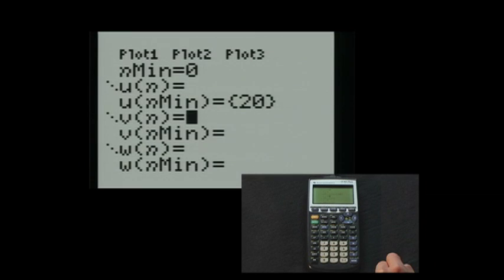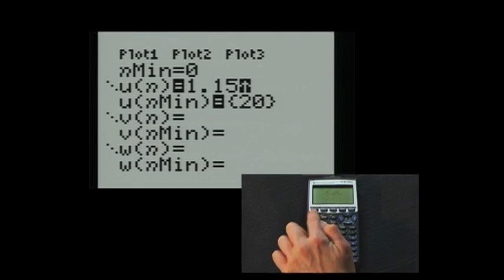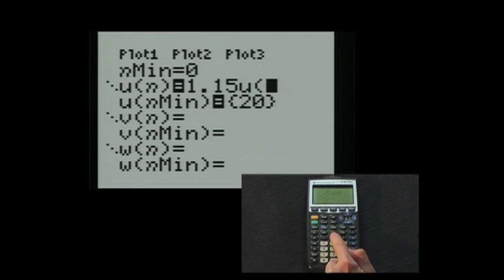Now notice that to type u, we will use the 7 key. We type 2nd 7 to get u. Since we are in sequence mode, we type the x key to obtain n. So for u of n, we type 1.15 2nd 7, n minus 1, close parentheses.